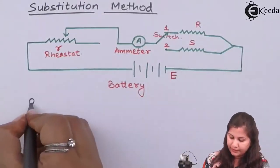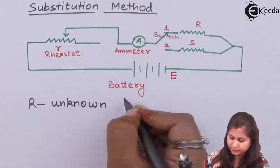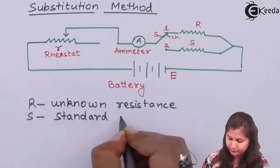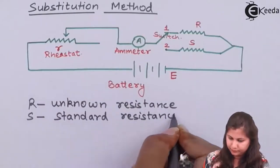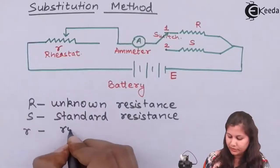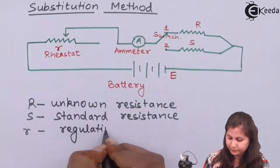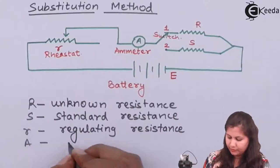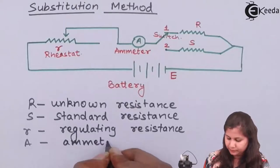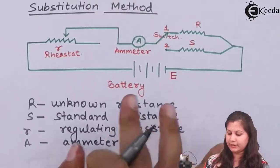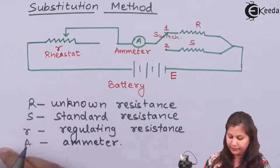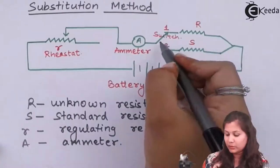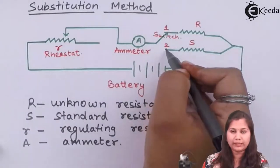R is the unknown resistance. Small r is the regulating resistance. A is the ammeter, and E is the EMF of the battery. This switch can be placed at two positions, one and two.